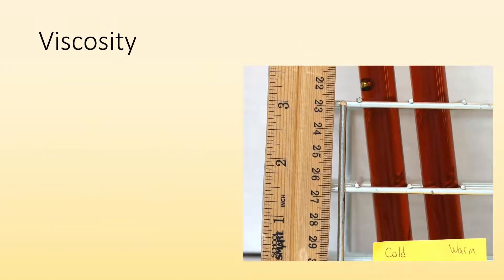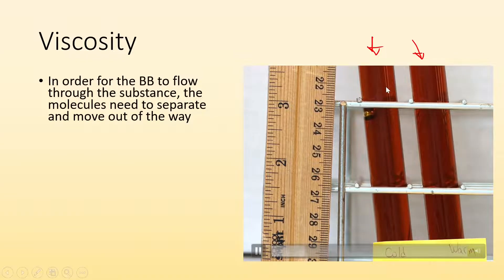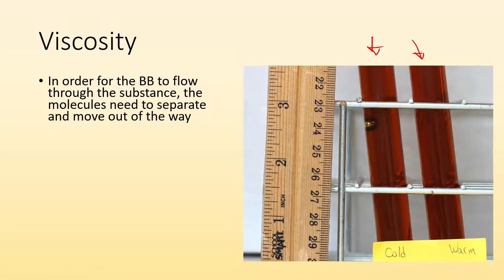Here's another way to look at it. Same kind of honey. I got cool honey on the left, warm honey on the right, and I got a BB floating through it. So in order for that BB to flow through the substance, the molecules need to separate and move out of the way.